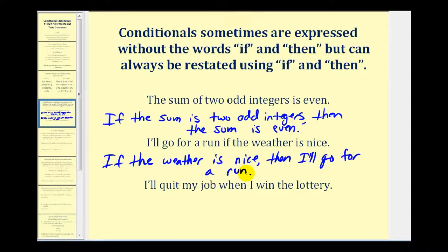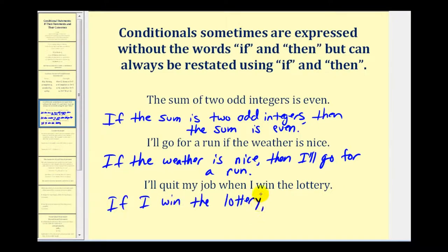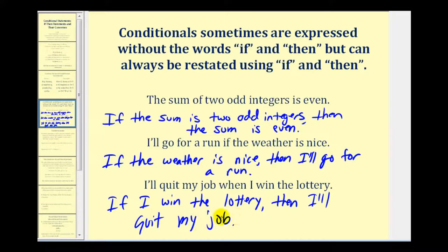It is important to read these carefully and identify which part is the hypothesis and which is the conclusion — it's not always in the order given. For the third statement, 'I'll quit my job when I win the lottery,' it could be expressed as: if I win the lottery then I'll quit my job. It could not be expressed as 'I'll quit my job then I'll win the lottery' — that would not mean the same thing.